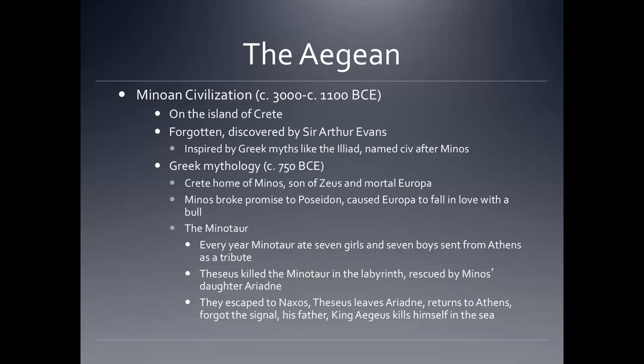Every year the Minotaur would demand to eat seven girls and seven boys sent from Athens as tribute, otherwise he would destroy the whole city. Our hero Theseus killed the Minotaur in the labyrinth and was rescued by Minos's daughter Ariadne — though how he paid her back is typical Greek mythology style. They escaped to Naxos and Theseus leaves Ariadne, even though she gave him the idea of how to make his way out of the labyrinth and he wouldn't have survived otherwise. He returns to Athens, and what he was supposed to do on the boat was send a signal to let his father know he was all right, but he forgot.